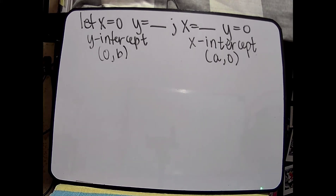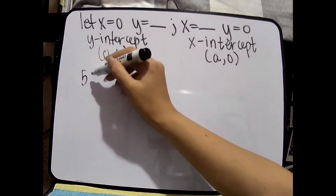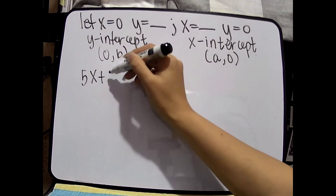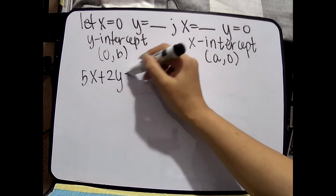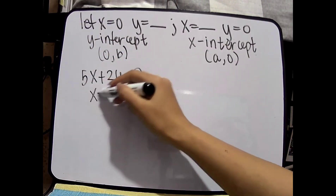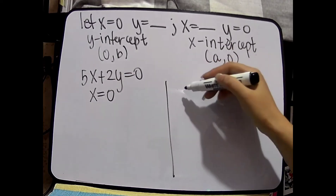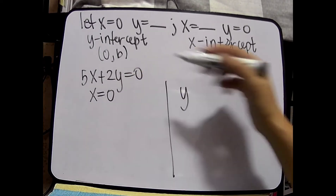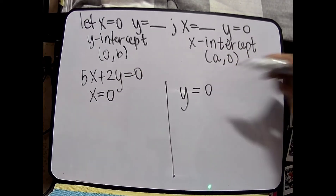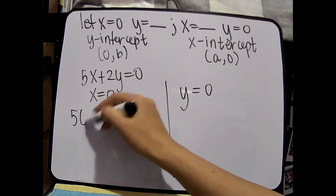Let's use an equation: 5x plus 2y is equals to 10. So, yung isa, x ang hahanapin natin — isasubstitute natin yung 0 sa x. Yung isa naman, yung y yung 0.